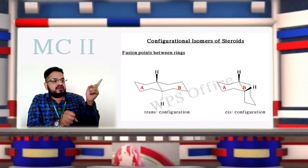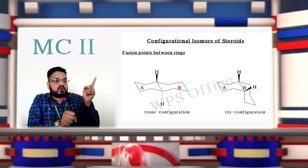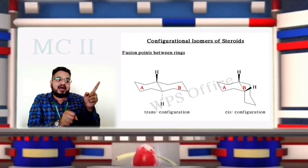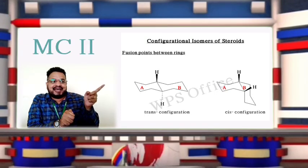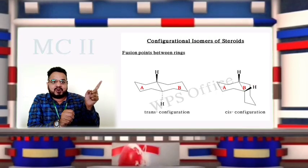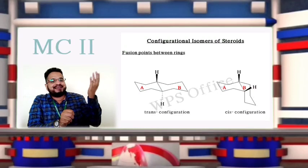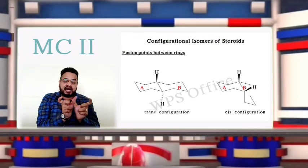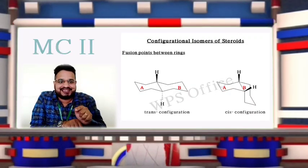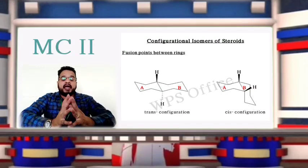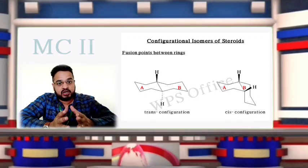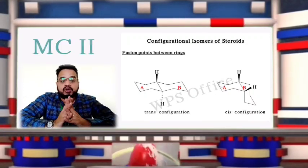Now check the second configuration. The difference is that in this case, both protons at the A and B ring junction are above the plane, meaning A and B rings are fused in cis configuration. So now we know how A and B in trans configuration looks, and how A and B in cis configuration looks.